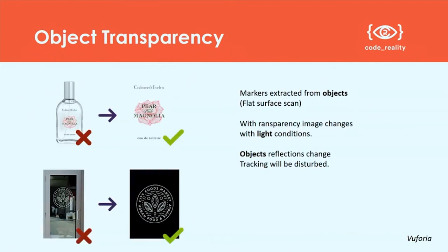If you're going to use a target that's on a 3D object — like a bottle or a door — don't make the door or the bottle the target. Take the recognisable thing that's not transparent and use that as the target, and ideally have a flat version of it — you don't want it distorted by the shape of the bottle. For a door, remove any transparency and have a solid background colour.